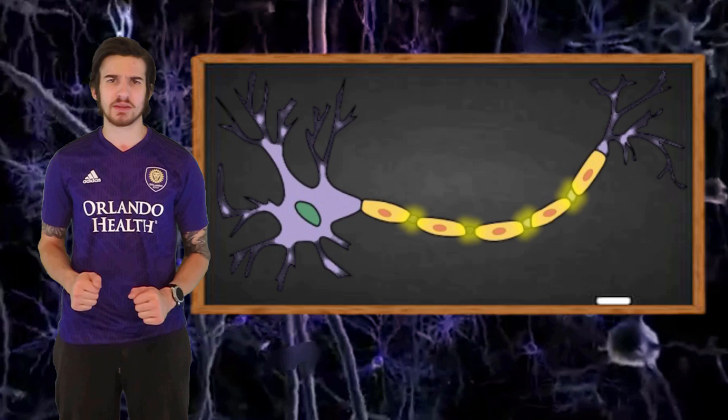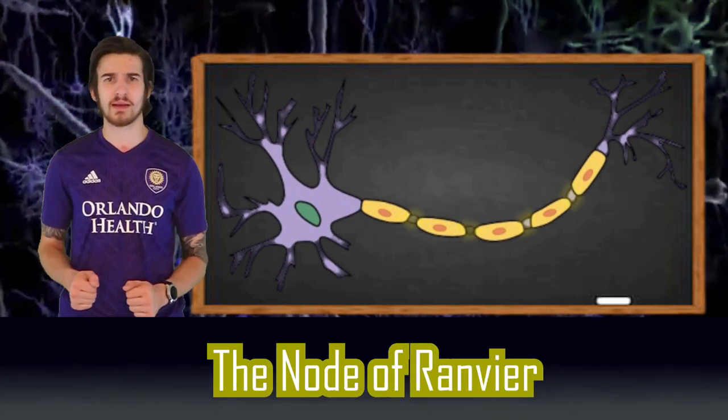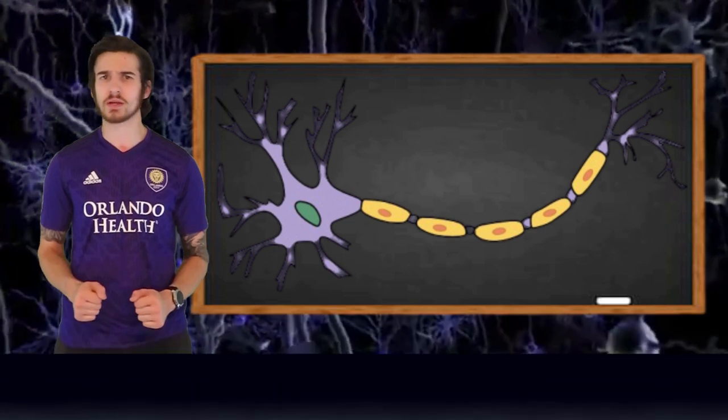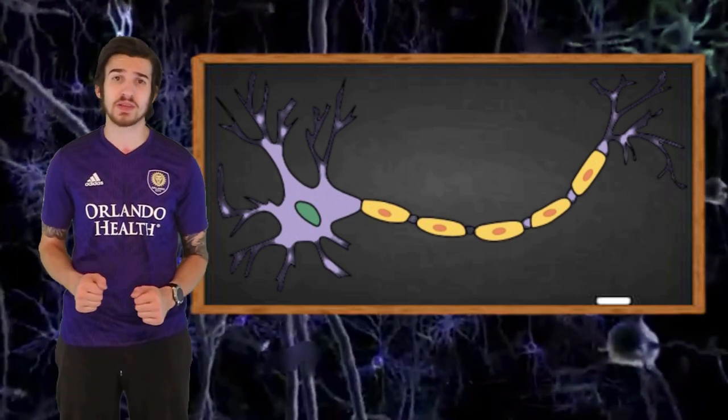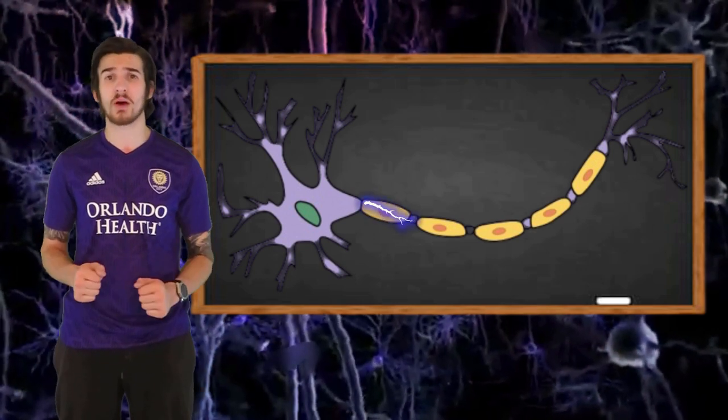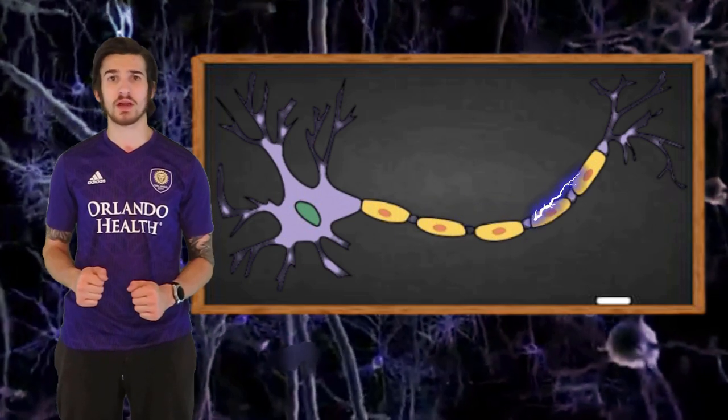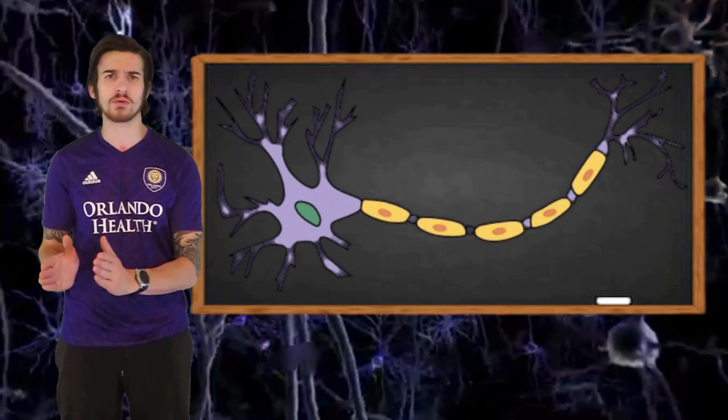The gap between each myelin sheath is referred to as the node of Ranvier. Without these breaks of myelin sheath, the neuron would not be able to fire its message as quickly as it can. This is because these gaps allow for ions to diffuse in and out of the neuron, which helps propel the electrical signal down the axon in a process known as saltatory conduction, where signals just rapidly jump from node to node.